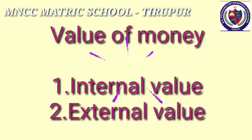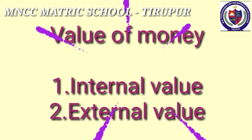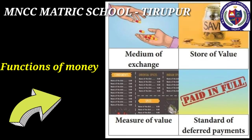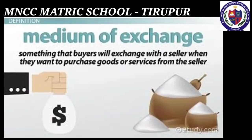The value of money means the purchasing power of money over goods and services. It is of two types: the internal value of money refers to purchasing power over domestic goods and services, and the external value of money refers to purchasing power over foreign goods and services. Functions of money are classified into primary, secondary, and contingent functions. Primary functions include medium of exchange and measure of value. Secondary functions include standard of deferred payment, store of value, and transfer of value.